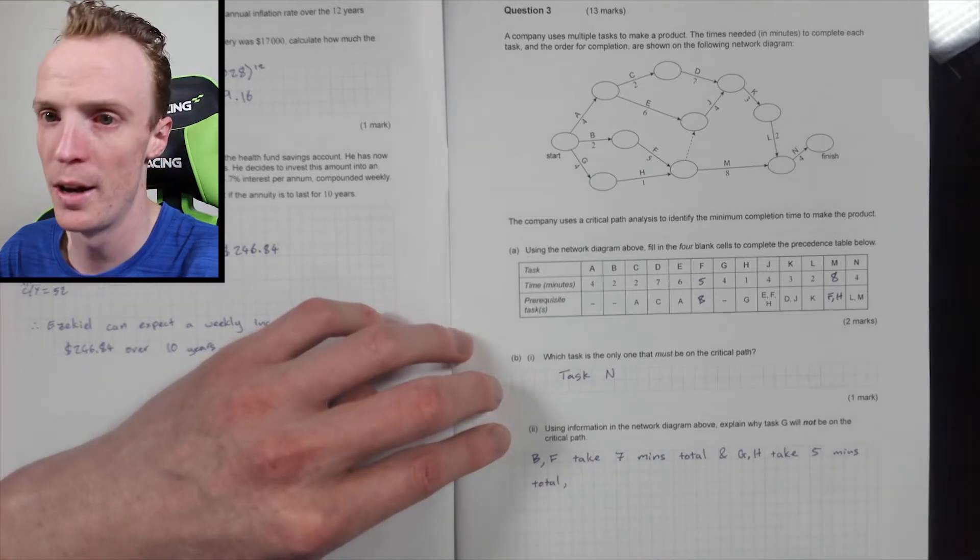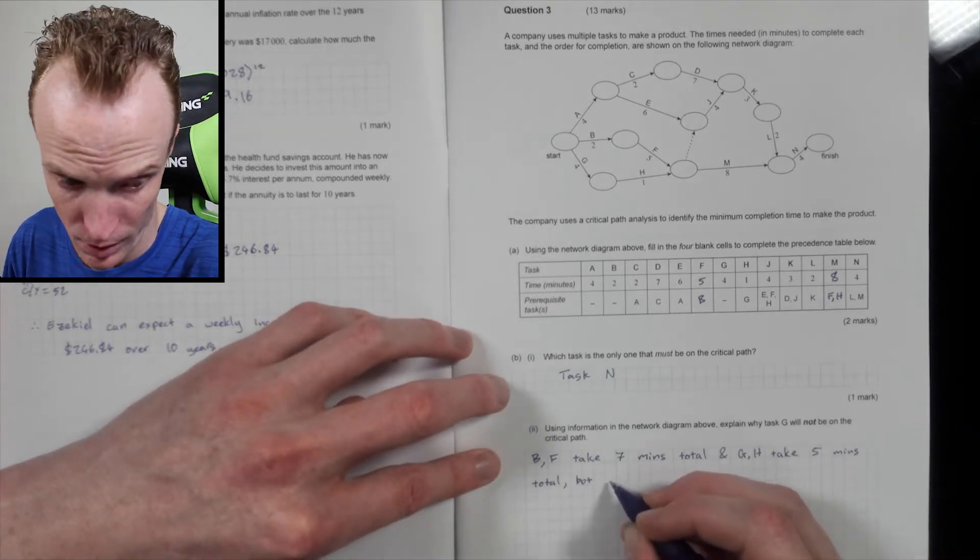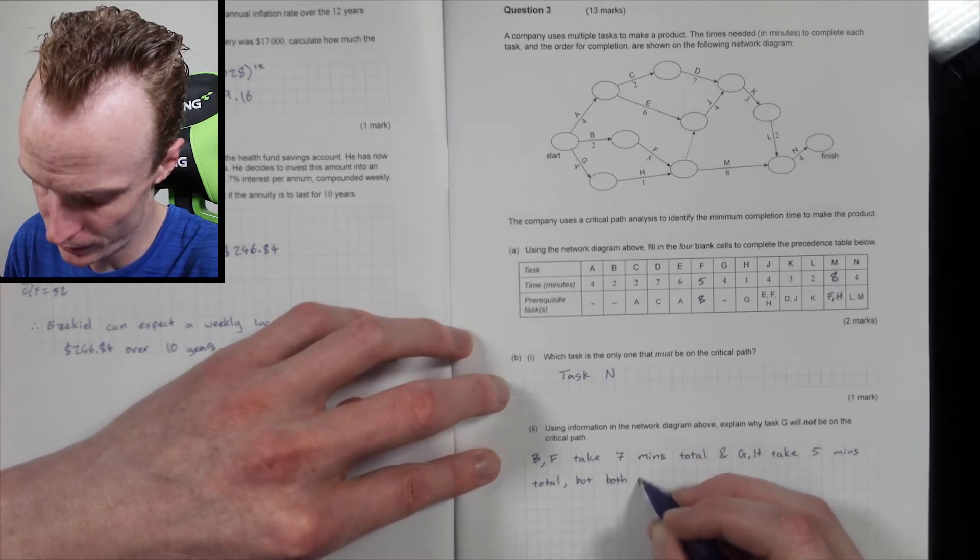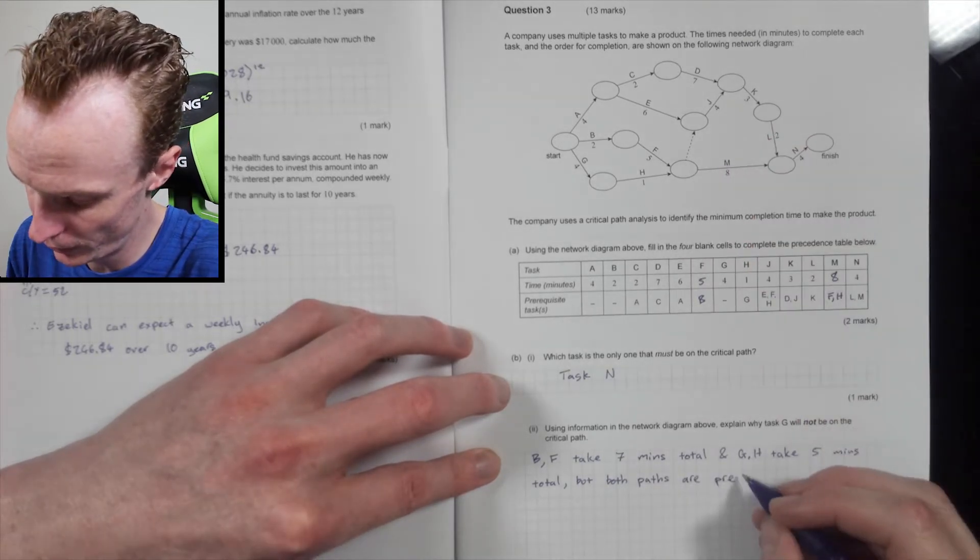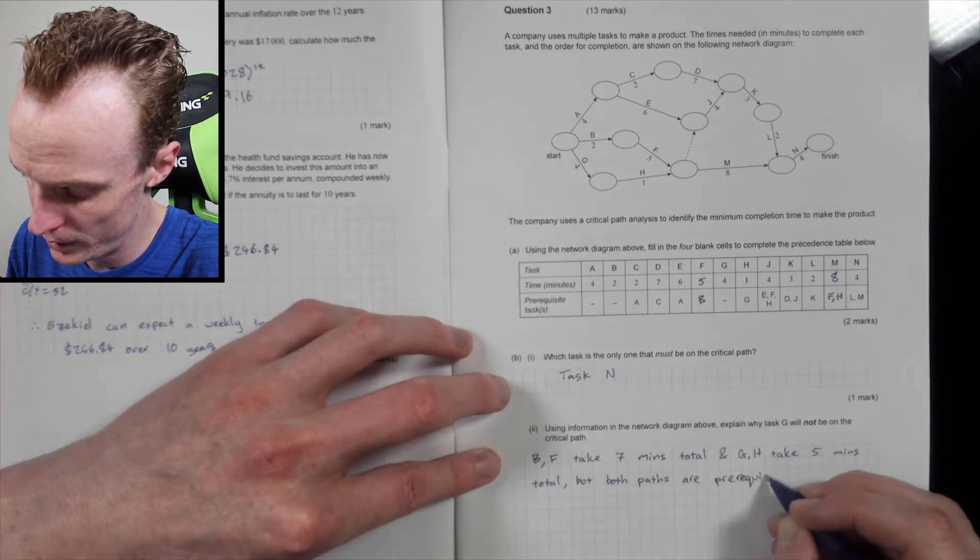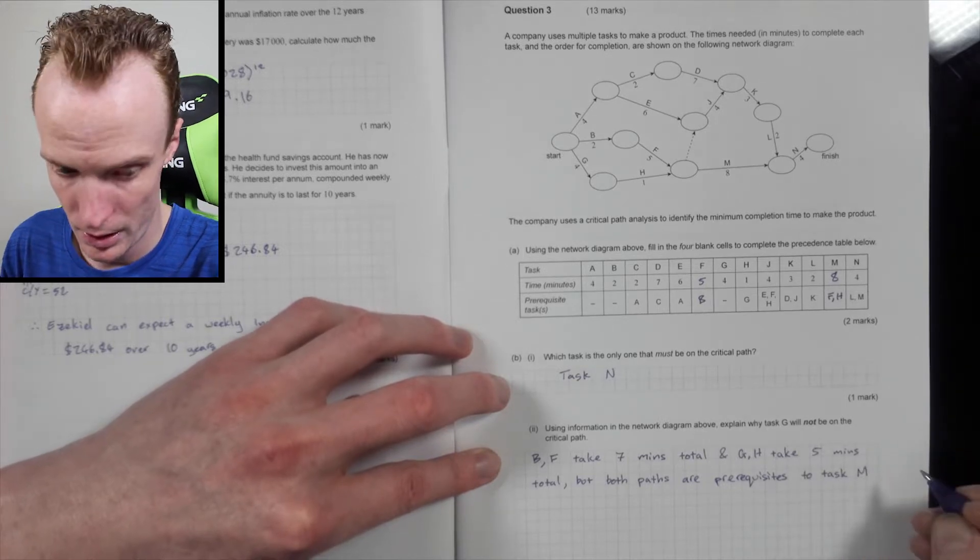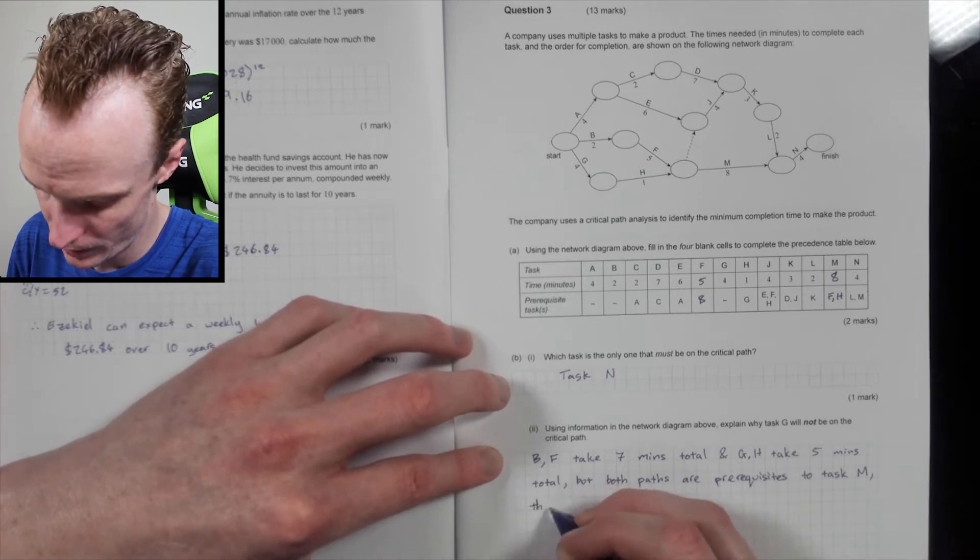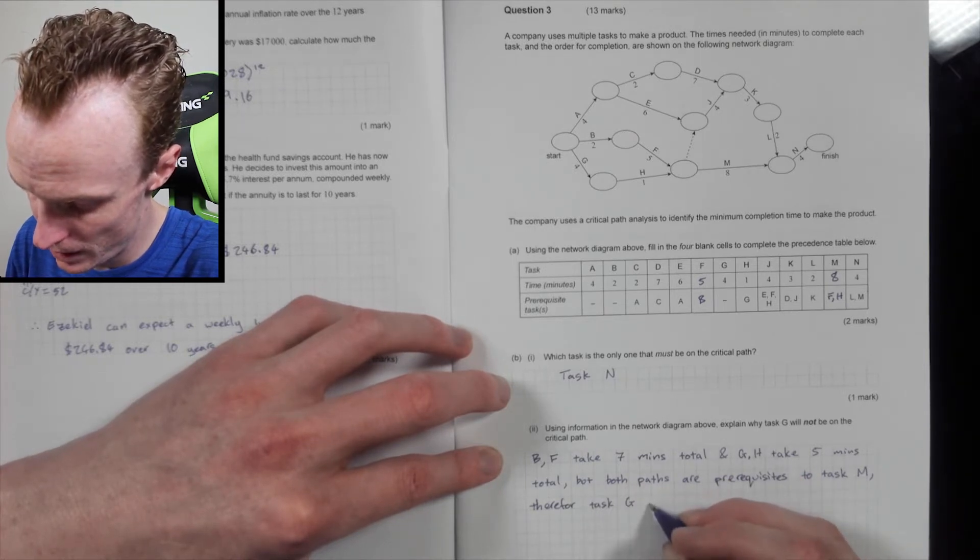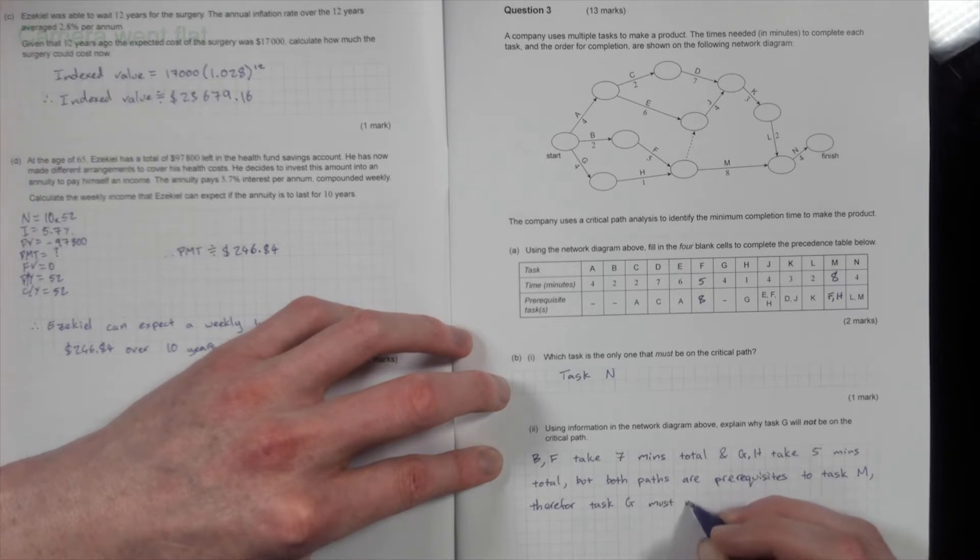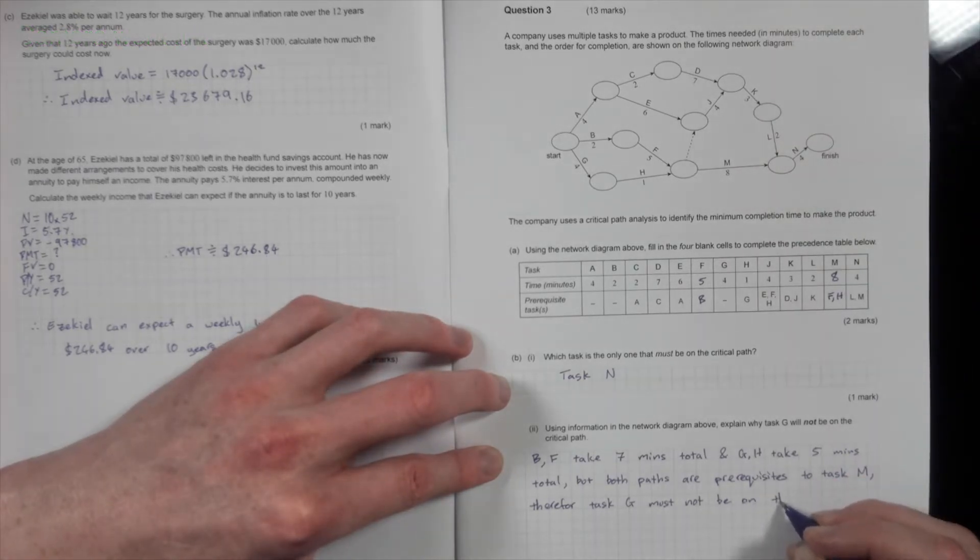Now you do have to explain why that's important. Just writing that's not enough. So, but both paths are prerequisites to this task here, so task M. Prerequisites to task M. Therefore, task G must not be on the critical path.